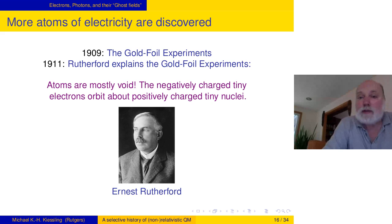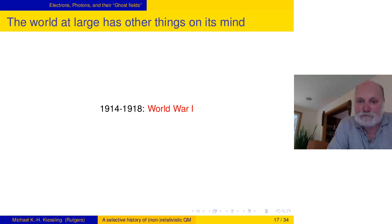Also in 1909, were the famous gold foil experiments of a bunch of people. One of them was Rutherford. Rutherford also gave an explanation two years later. He interpreted the gold foil experiments where they scattered alpha particles off the nuclei in gold foil. He concluded that what they saw meant that atoms are mostly void, they are empty space. Negatively charged tiny electrons orbit about positively charged tiny nuclei. That was the model he proposed, a planetary model of atoms.